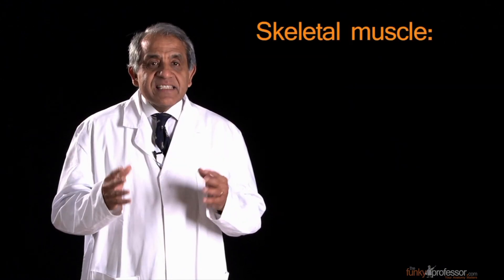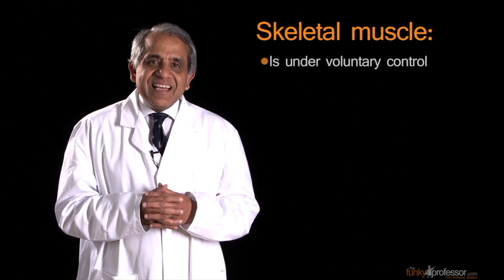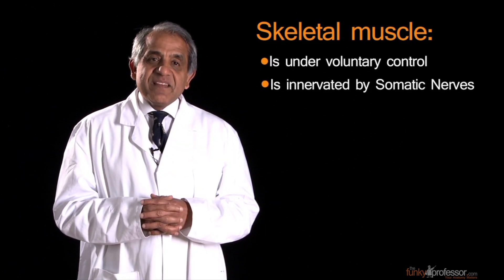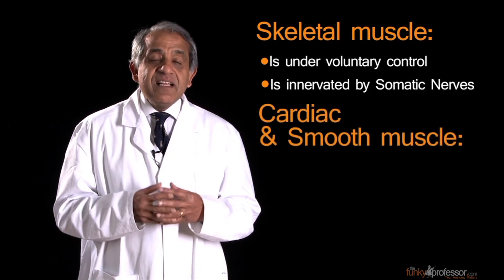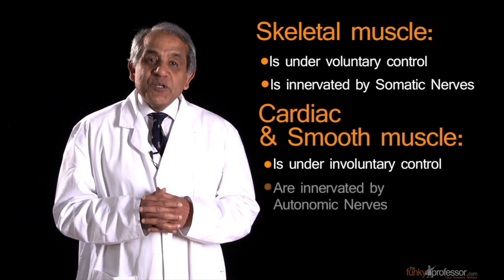A fundamental and crucial difference between skeletal muscle on the one hand and cardiac and smooth muscle on the other is the fact that skeletal muscle is under voluntary control and thus is innervated by somatic nerves. By contrast, cardiac muscle and smooth muscle are involuntary and therefore innervated by autonomic nerves.